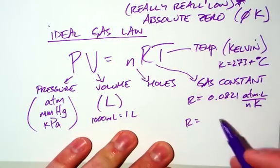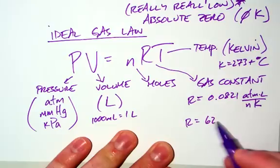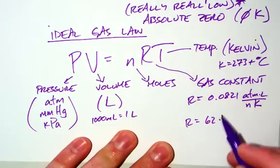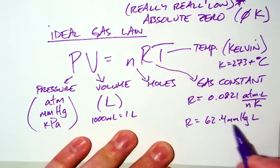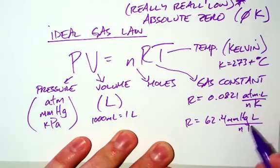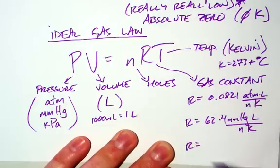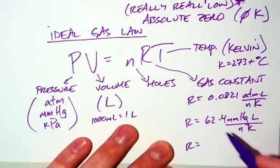If our pressure is in millimeters of mercury, it's going to be 62.4 millimeters of mercury liters over mole Kelvin.